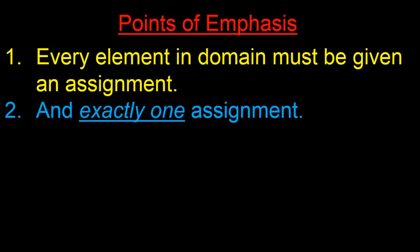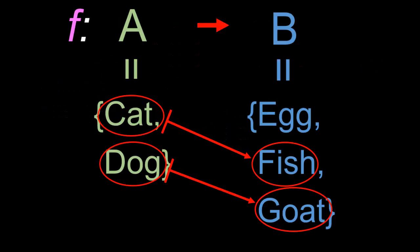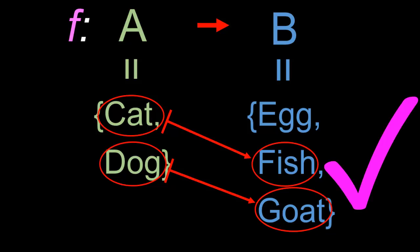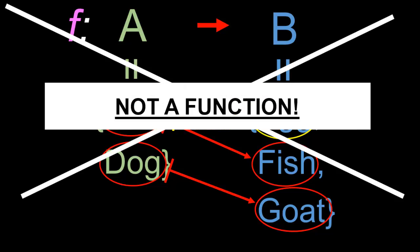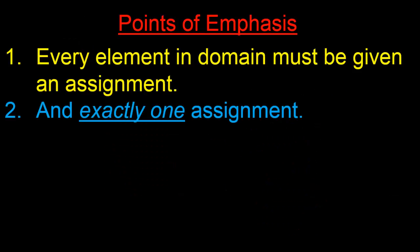Now for our second point of emphasis. The second point is that each element in the domain is assigned to exactly one element in the co-domain — no more and no less. In our example of f, the function f assigns cat to fish and dog to goat, so f was indeed a proper function. Suppose instead we modified f so that f assigns cat to fish, but now we also claim that f assigns cat to egg as well. With this modification, f is no longer a function, because we have assigned cat to both egg and fish, which violates the rule that each element in the domain is assigned to exactly one element in the co-domain — nothing more and nothing less.